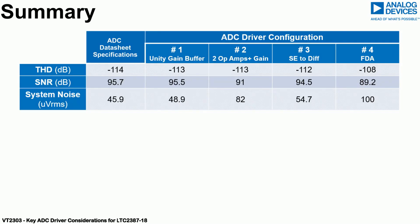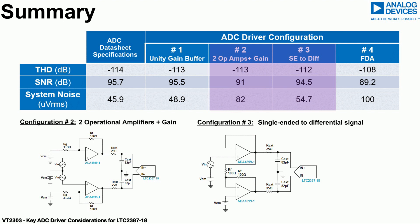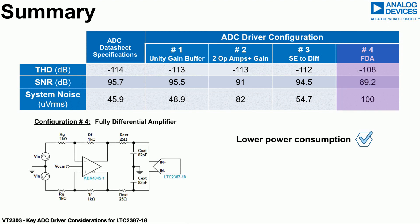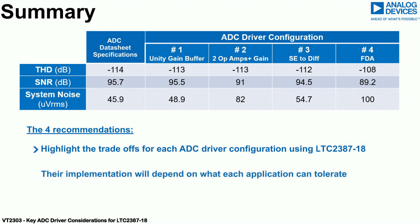In summary, optimum SNR and THD performance for the LTC 2387-18 is achieved with a unity gain buffer ADC driver circuit. Adding gain or single-ended to differential conversion to the ADC driver circuit impacts SNR and THD. Lower power consumption is achieved with a fully differential amplifier used as the ADC driver, but at the expense of degraded SNR and THD performance. The four recommendations highlight the trade-offs for each ADC driver circuit configuration, and implementation will depend on what the application can tolerate.